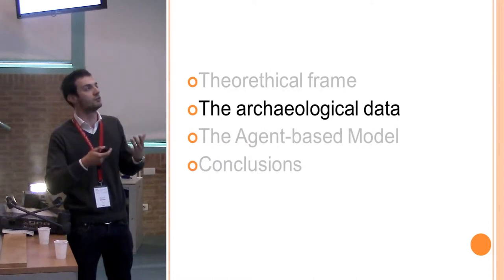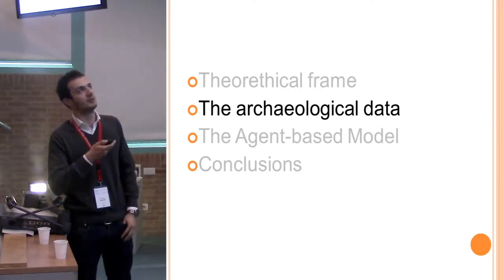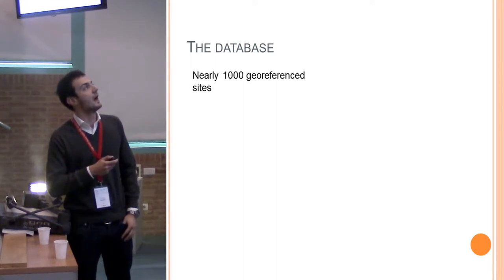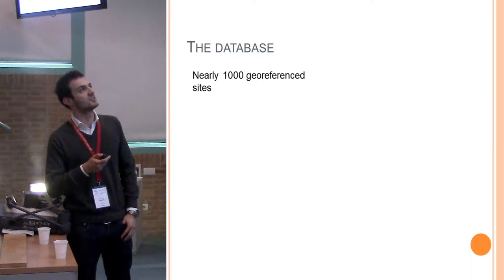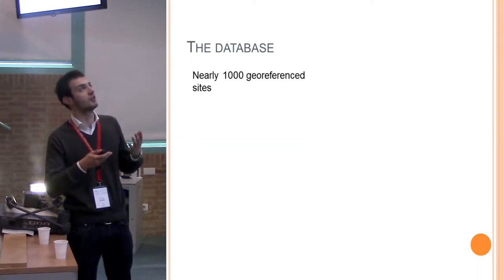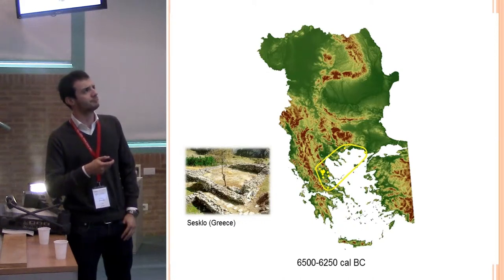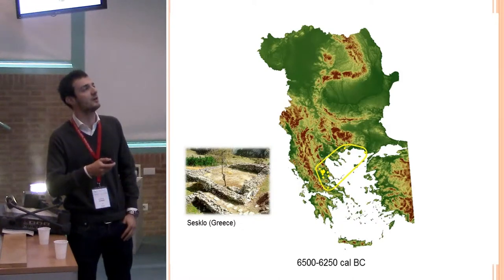The archaeological data will also be used in future for analyzing the results of the simulation and for validating the results. A geographical database was built, including nearly 1,000 georeferenced sites. Unfortunately, many of the sites are just surveys, so no C-14 dating is available. But still, having a general cultural attribution of the sites makes it possible to find a general periodization of the spread of the early Neolithic in the Balkans. Assuming that the Neolithic came to Europe through Western Anatolia, all the sites we can find in Europe are in this area.